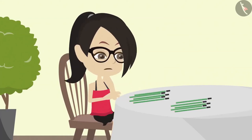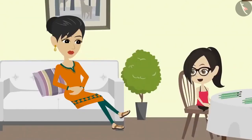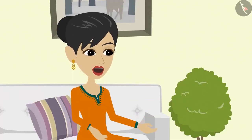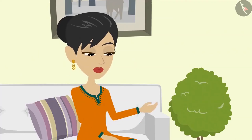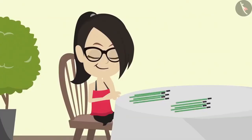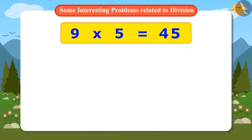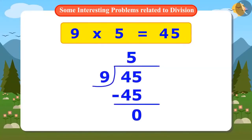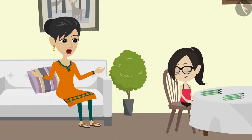Vandana has understood that she can divide and distribute things. But she still does not understand one thing. Mummy, when you can equally distribute the pencils one by one, then what is the need to divide it? For that, I will ask you a question. If you have forty-five pencils and you are asked to divide them into nine parts, which method will be easier: distributing the pencils one by one, or dividing forty-five by nine? I remember the multiplication table of nine. The nine fives are forty-five. This means that if among nine people, forty-five pencils are to be divided, then everybody will get five pencils. This means the division method is easier.